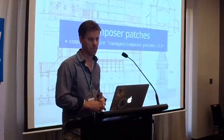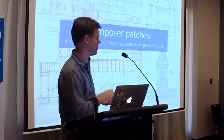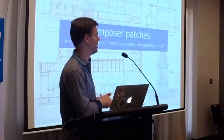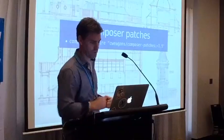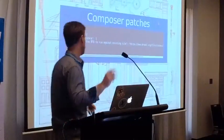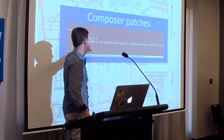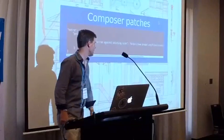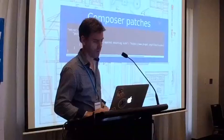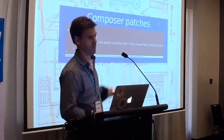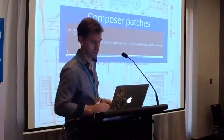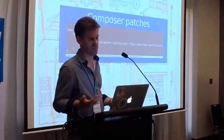Another plugin I highly recommend is Composer Patches. If you're familiar with Drush Make, you'd put a list of patches for a project there. This plugin lets you have a patches section in your composer.json extra. You name the package and namespace, then give a human-readable description of what the patch is for so someone reading the file can understand it, then provide a URL to the patch file. That can be an HTTP URL, or a local path like ./patches if you want to keep patches in your repository.